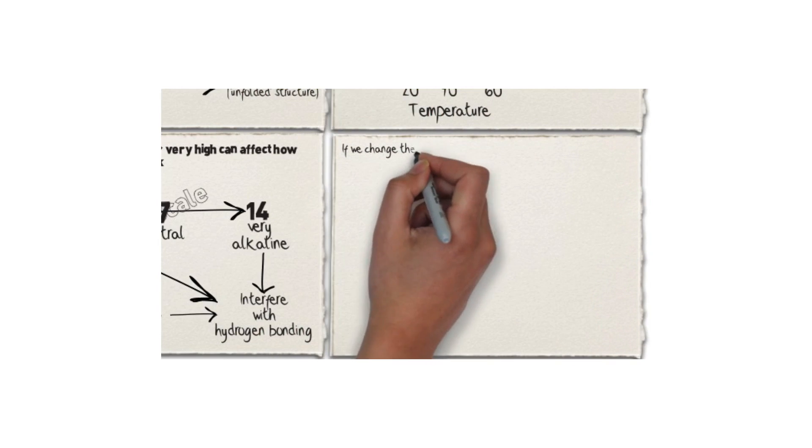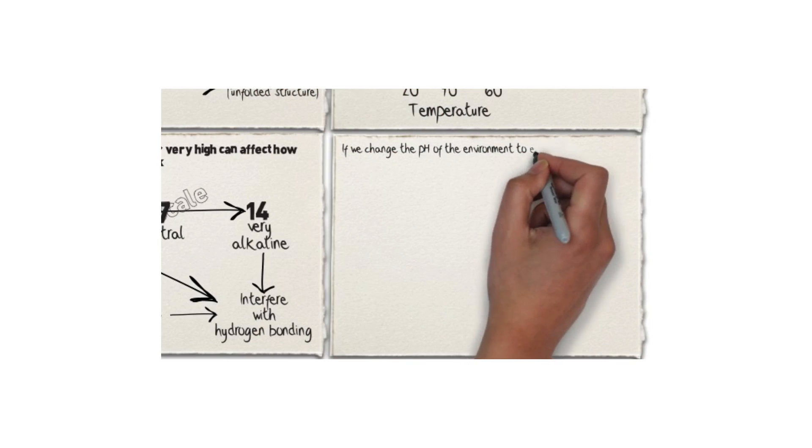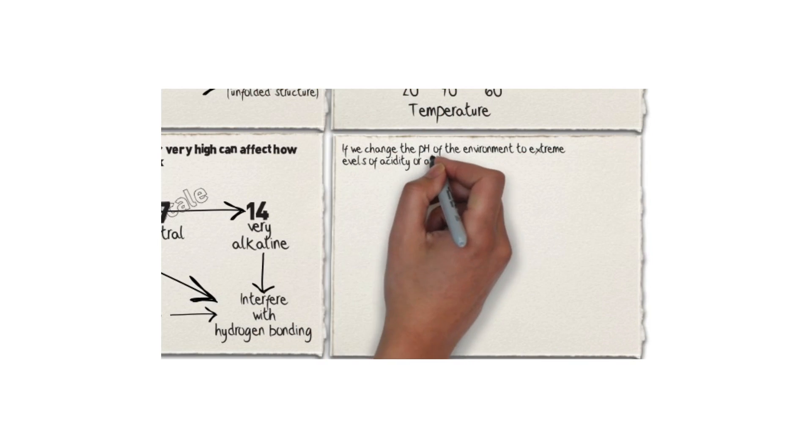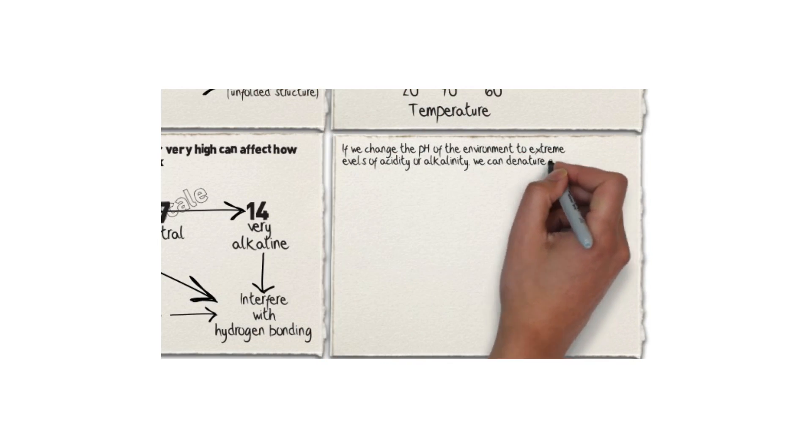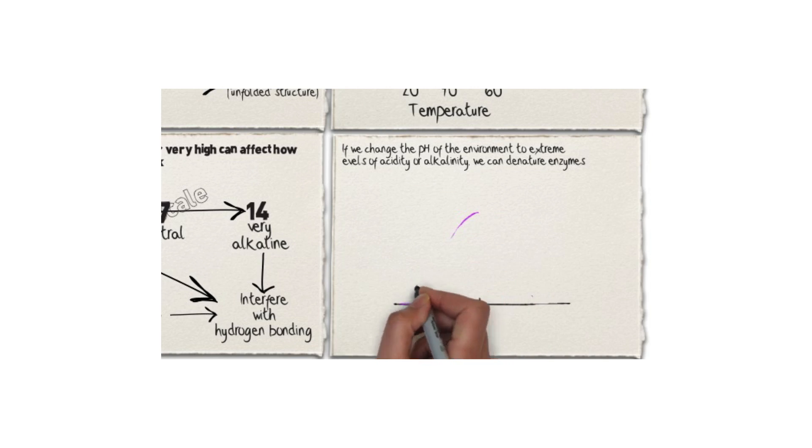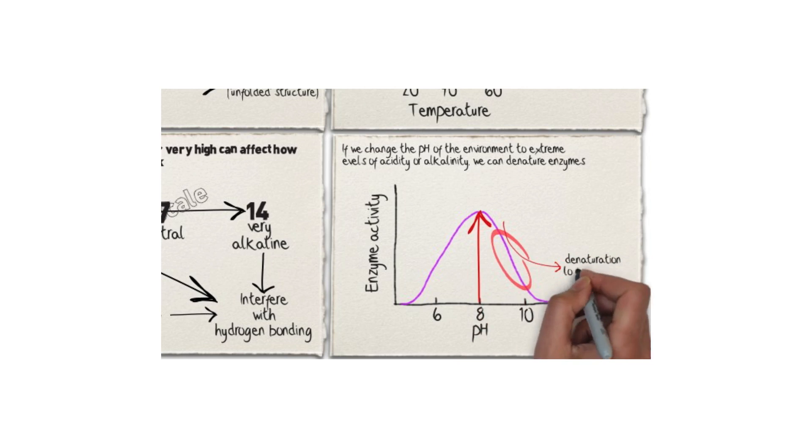If we change the pH of the environment to extreme levels of acidity or alkalinity, we can denature enzymes. Most organisms are adapted to function at pH levels that are not extremely acidic nor extremely alkaline. This graph shows how enzymes behave as pH changes. Similar to what happens with temperature, when the pH increases beyond a certain point, the enzyme structure begins to denature and the enzymatic activity decreases until it is lost.